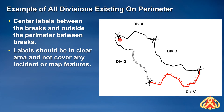Division labels should be centered between the two breaks and placed on the outside of the fire perimeter. They should be placed in a location where they do not cover other features on the map.